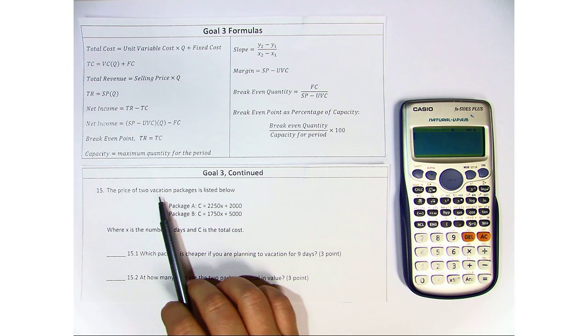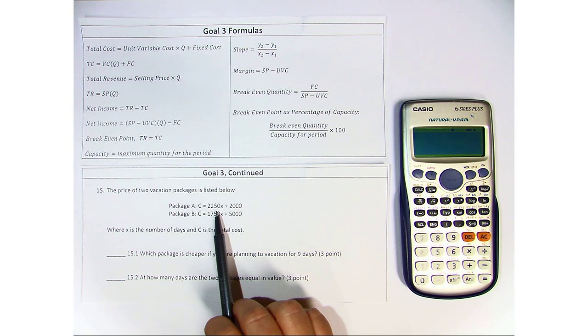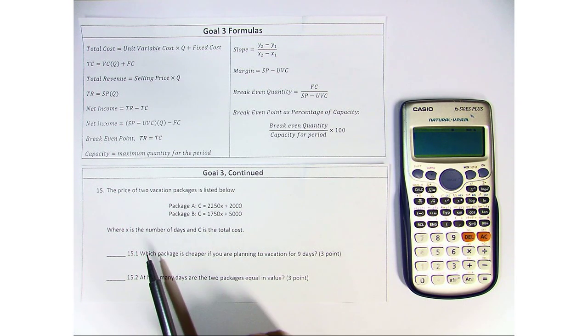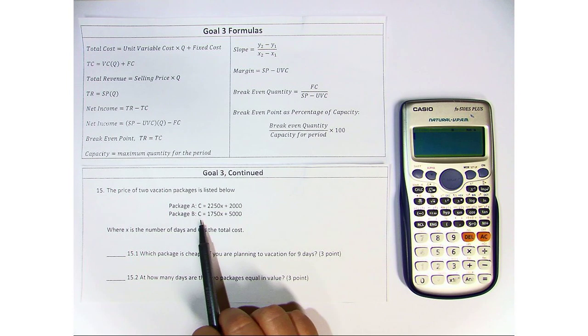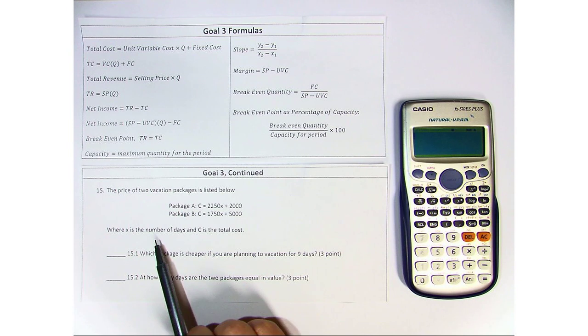The price of two vacation packages is listed below. Package A: C equals 2250X plus 2000. And package B: C equals 1750X plus 5000, where X is the number of days and C is the total cost.